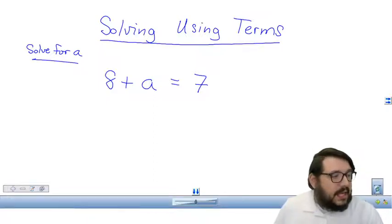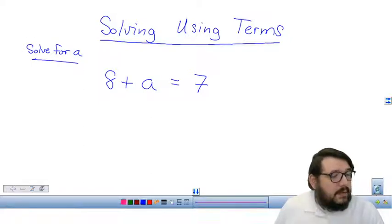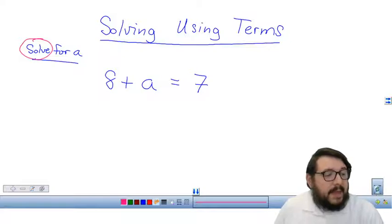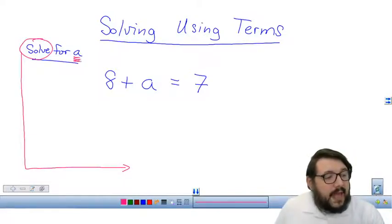Alright, so the first thing that we're going to do in solving an equation is we're going to look at our keyword solve. Okay, so here I have my keyword solve. And remember, remember that when we see the keyword solve we need to go all the way down to the bottom and establish our goal. It says solve for A. So that means that my goal should be A equals something.